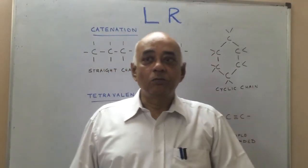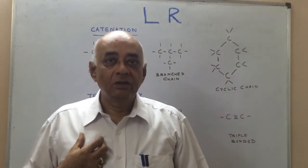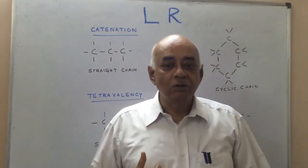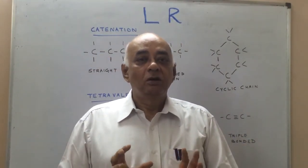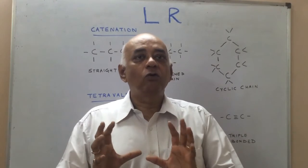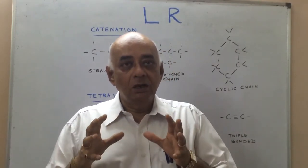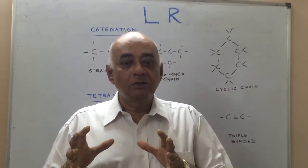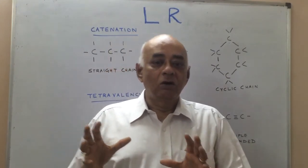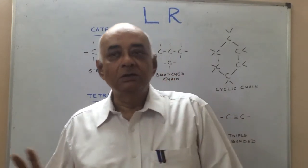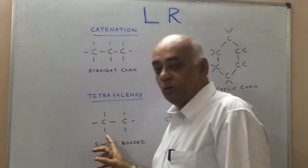The second property is the property of tetravalency. This characteristic of carbon refers to the ability of carbon to form four covalent bonds, which could be a single bonded carbon, double bonded carbon, or triple bonded carbon. This is also indicated very clearly on the board.